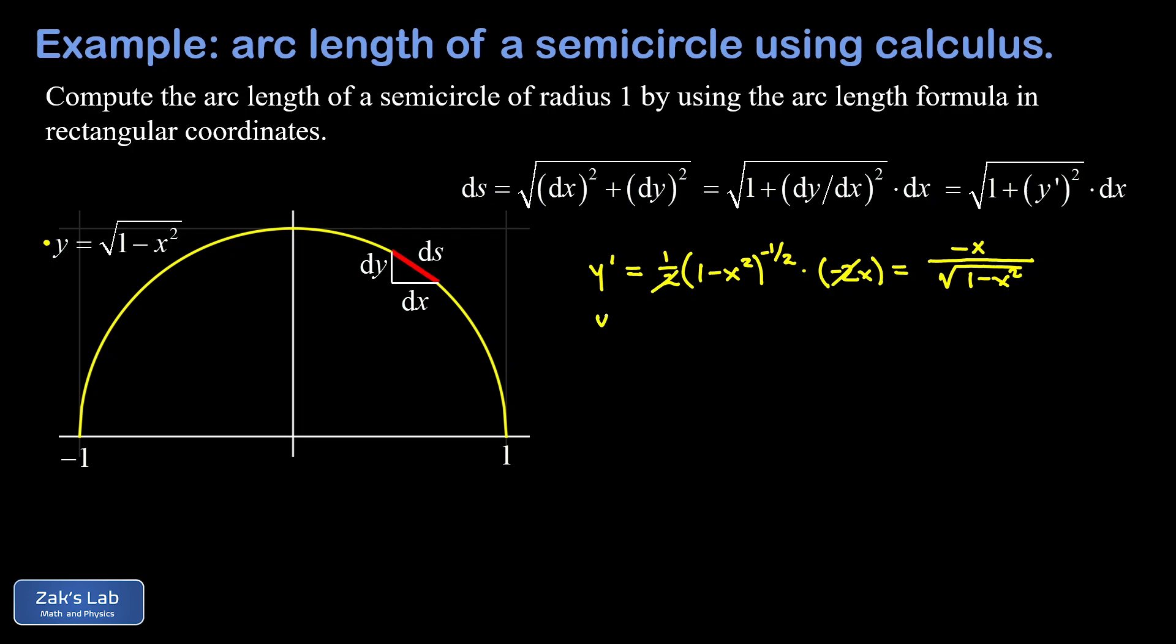So when we square that thing, the minus sign in the numerator goes away and I just have x squared over one minus x squared. So all this means that our ds arc length increment is given by the square root of one plus x squared over one minus x squared dx.